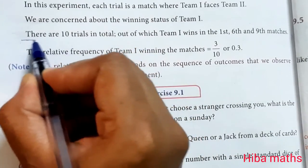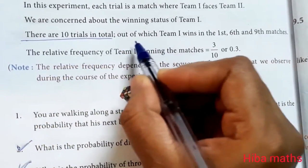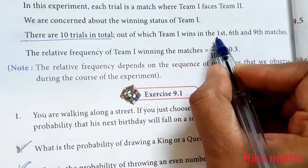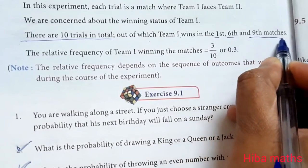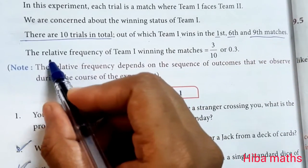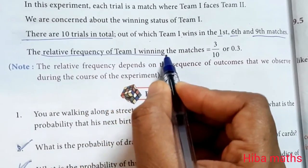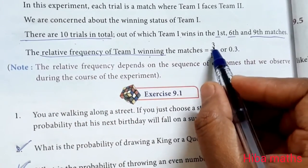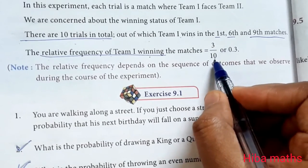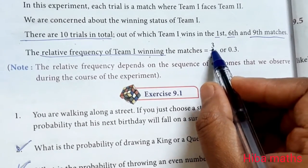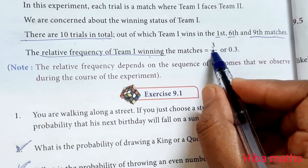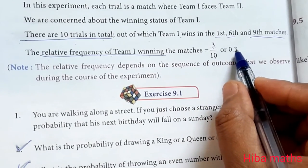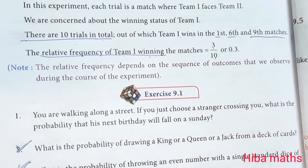There are 10 trials in total, out of which Team 1 wins in the 1st, 6th, and 9th matches. So, relative frequency of Team 1 winning is the total number of matches Team 1 wins, which is 3, divided by the total number of matches, which is 10. That equals 3/10 or 0.3. This is the answer.